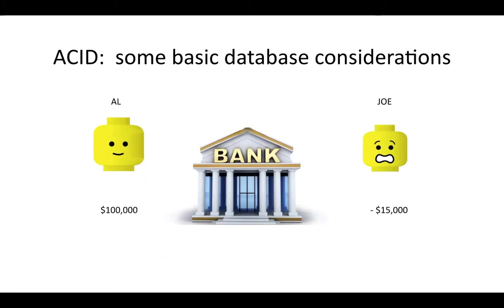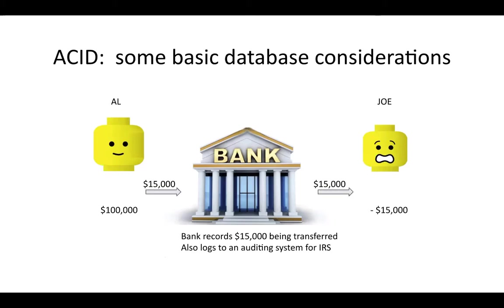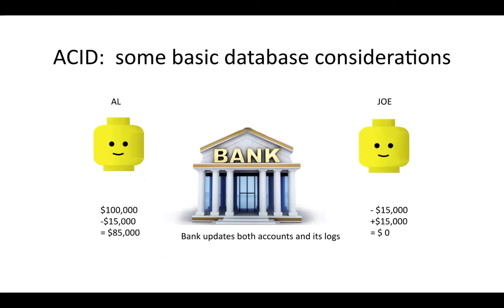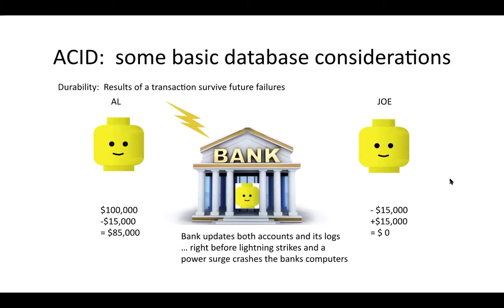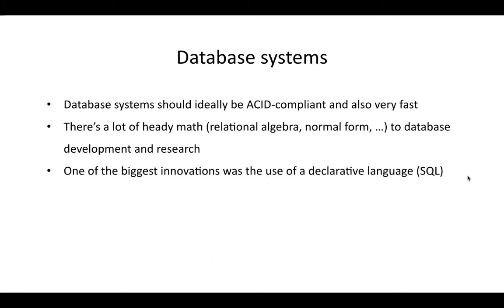Finally, the D in ACID — durability. Say the bank successfully records the $15,000 transaction and it logs successfully to its auditing system. Then right after the transaction occurs, lightning strikes and a power surge crashes the bank's computers. In this case, you want the results of the transaction to survive any failures. This maintains the integrity of the data in the database. So we have Atomicity, Consistency, Isolation, and Durability — these are key concepts, and you'll often hear of ACID-compliant database management systems.